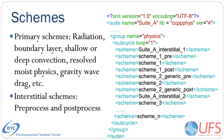Interstitial schemes can be further divided into two subtypes: scheme-specific and suite-level. Scheme-specific interstitial schemes are used for one specific scheme, whereas suite-level interstitial schemes process data that are relevant for multiple schemes within a suite.